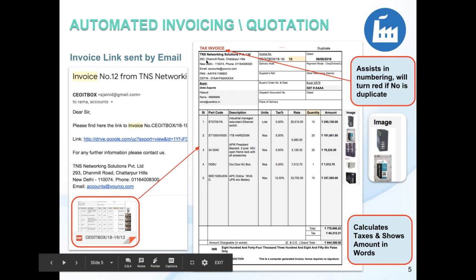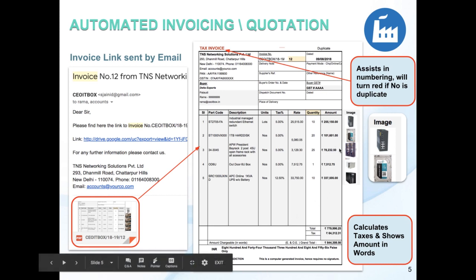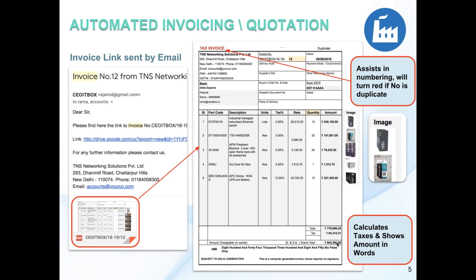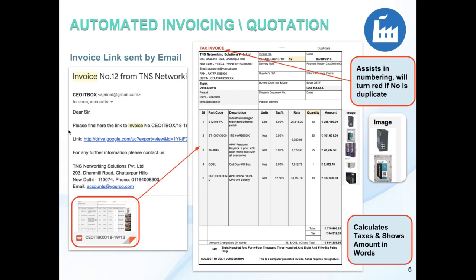Here is the format of the invoice, which contains your name, the details of the customer, and other fields. You only need to enter the quantities — the images and the rest of the invoice fill in automatically, including all the figures. The total amount of the invoice, which is in figures, is also converted into words automatically, and you can see the product images included.